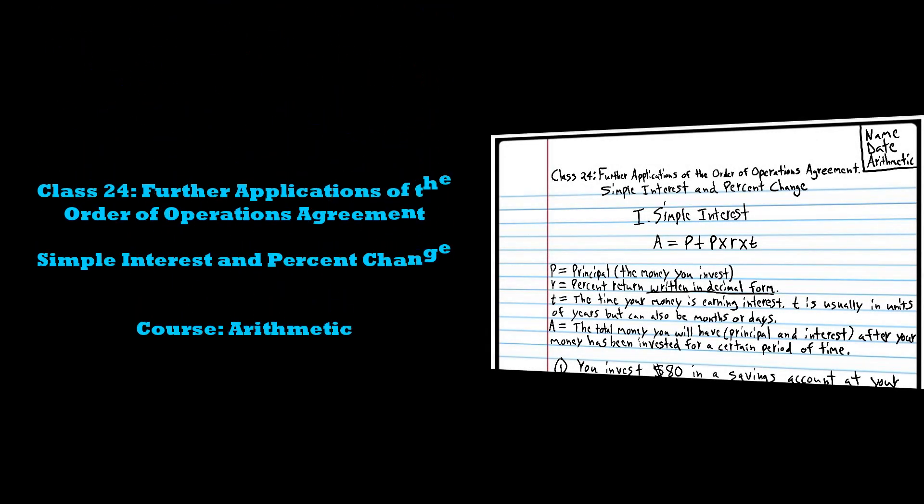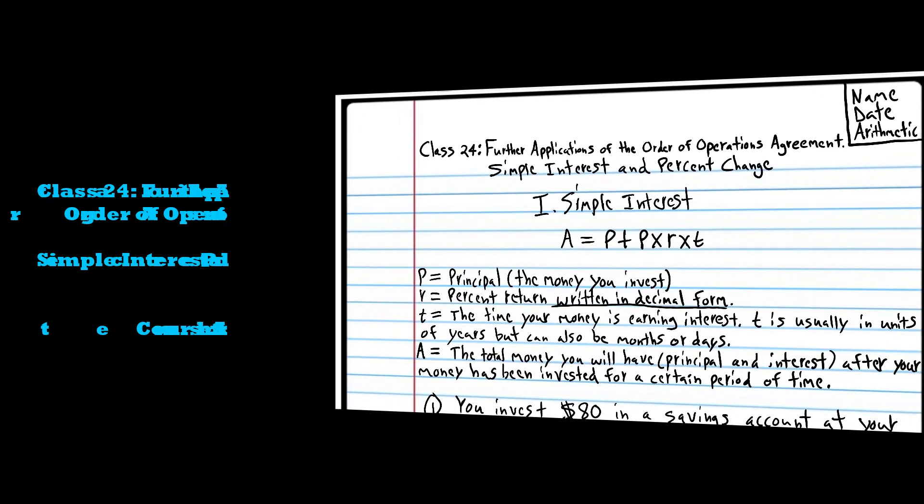This is class 24 of my arithmetic course. In the last class we learned the order of operations agreement and we applied that agreement to geometric formulas. In this class we're going to learn additional applications of the order of operations agreement, specifically simple interest and percent change.